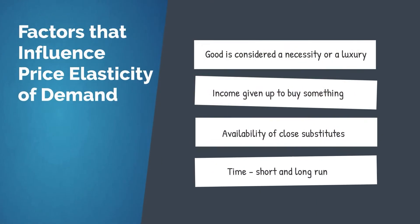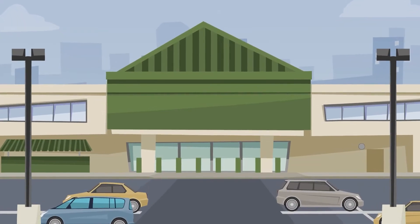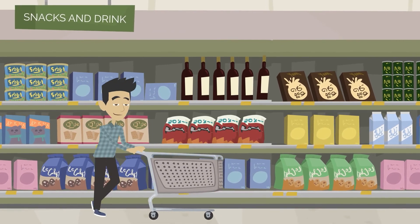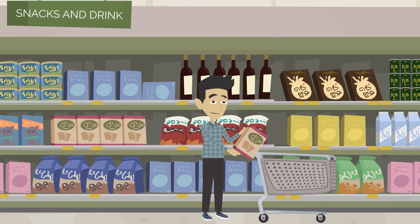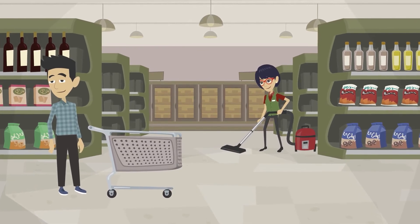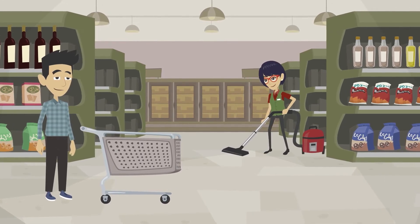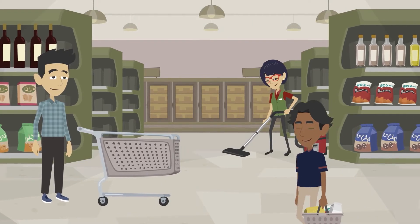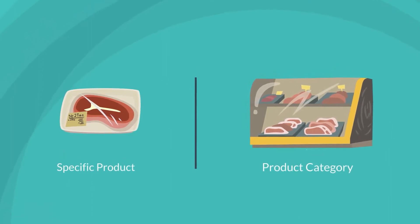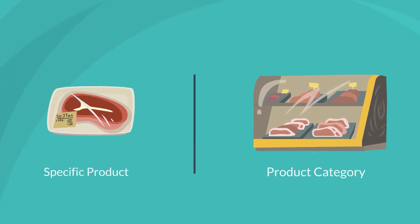The third factor of price elasticity is the availability of close substitutes. A good with few close substitutes tends to be more inelastic than those with many substitutes. When the price of that good rises, you may start looking for substitutes to purchase to avoid paying the higher price. The more substitutes there are, the less likely you and other people are to buy the good at the higher price. When thinking about price changes, it's important to distinguish between a change in the price of a specific product and a change in the price of a product category.